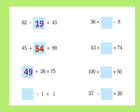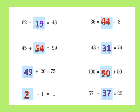What minus 1 equals 1? This one is easy: 2 minus 1 equals 1. For 36 equals what number minus 8, add 8 to 36 — the answer is 44. For 43 plus what equals 74, subtract 43 from 74 — the answer is 31. For what equals 50, the answer is 50. For 57 minus what equals 20, subtract 20 from 57 — go two steps down — the answer is 37.